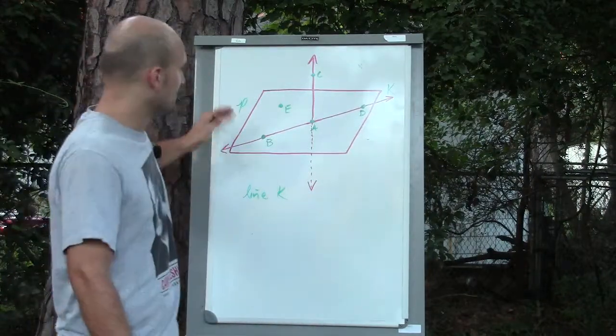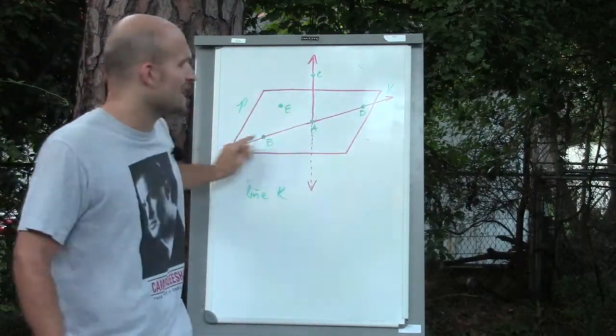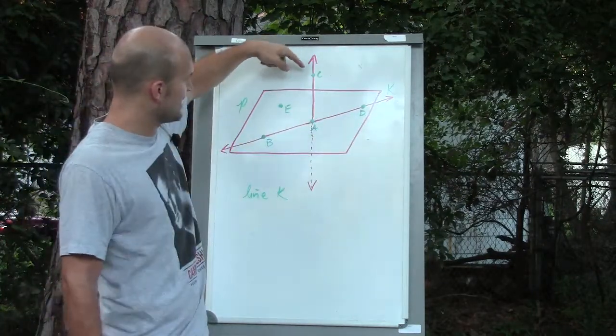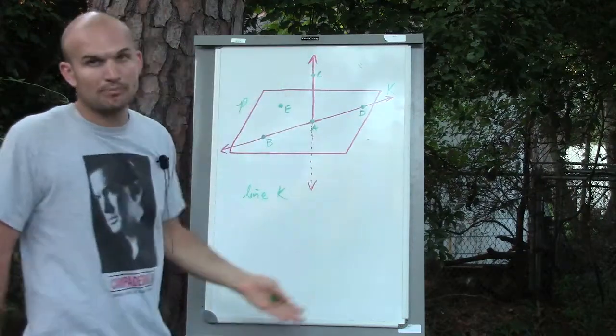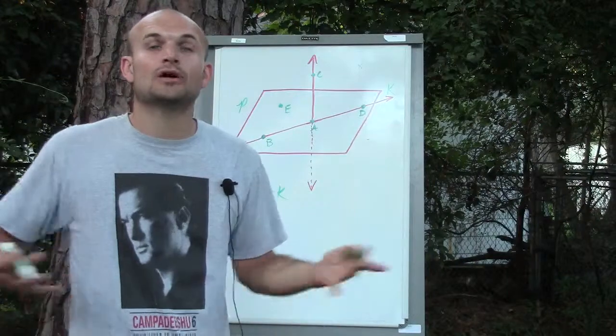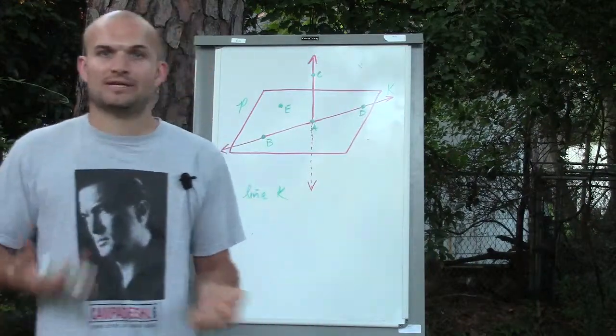We can see that line K is on the plane P, and this line CA actually goes through the plane P. What I want to do for this video is just show you a couple different ways to label them, because in geometry